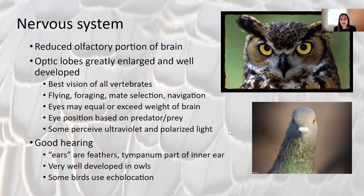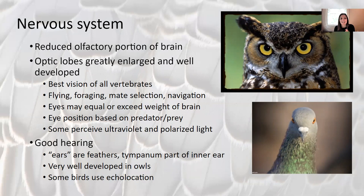The nervous system in birds has a reduced olfactory portion — most birds do not have a great sense of smell, but they do have a great sense of sight. The optic lobes are greatly enlarged and well developed. Birds have the best vision of all vertebrates; in some birds, the total weight of their eyeballs exceeds the total weight of their brain. Sight is used for flying, foraging, mate selection, and navigation. Eye position tells you whether an individual is predator or prey — eyes in front means ready to hunt; eyes on the side means evade predators.